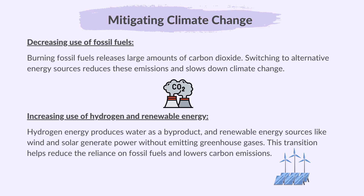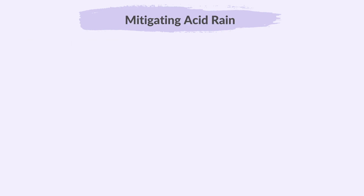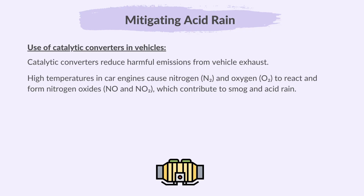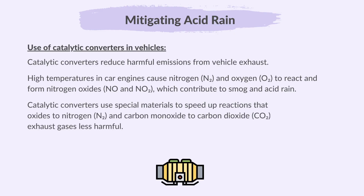This transition helps reduce the reliance on fossil fuels and lowers carbon emissions. Here are some ways to reduce the effects of acid rain. Use of catalytic converters in vehicles: catalytic converters reduce harmful emissions from vehicle exhaust. High temperatures in car engines cause nitrogen and oxygen to react and form nitrogen oxides, which contribute to smog and acid rain. Catalytic converters use special materials to speed up reactions that convert nitrogen oxides to nitrogen and carbon monoxide to carbon dioxide, making the exhaust gases less harmful.